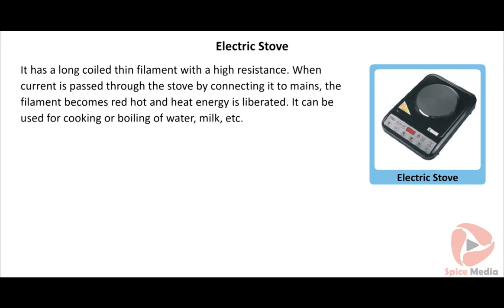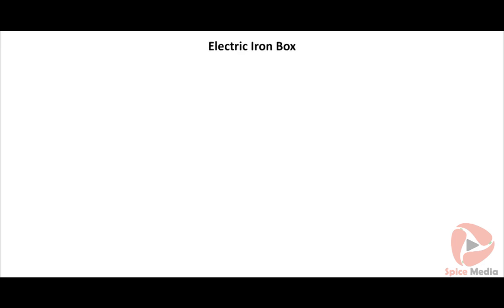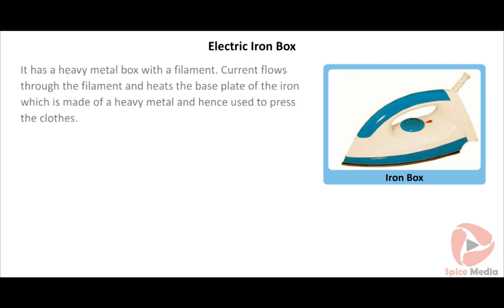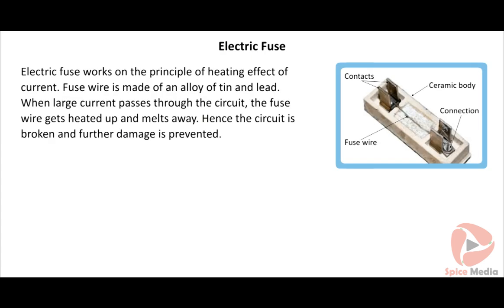The electric stove has a long, coiled, thin filament with high resistance. When current is passed through the stove by connecting it to mains, the filament becomes red-hot and heat energy is liberated. The electric iron box has a heavy metal base with a filament. When current flows through the filament, it gets heated up, which in turn heats the base plate and is used to press clothes. Electric fuse is a safety device that works on the heating effect of current — the fuse wire, made of an alloy of tin and lead, melts when large current passes, breaking the circuit and preventing further damage.